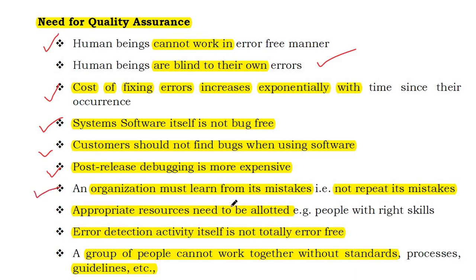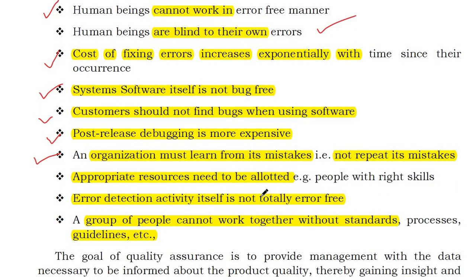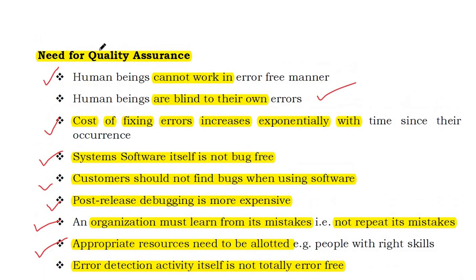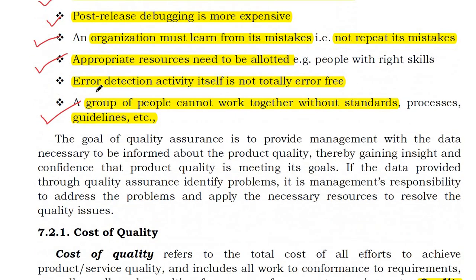An organization must learn from their mistakes and not repeat them. The appropriate resources need to be allotted with the right people and the right skills. The error reduction activity itself is not totally error-free. A group of people cannot work together without standards, processes and guidelines. These are the needs for quality assurance.